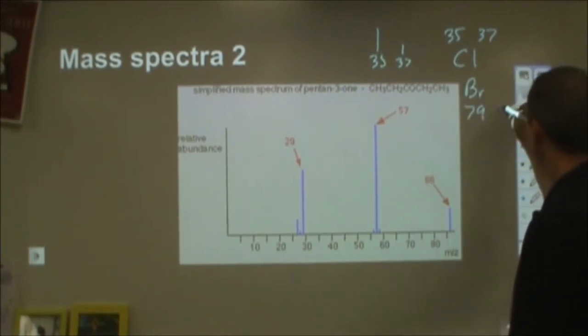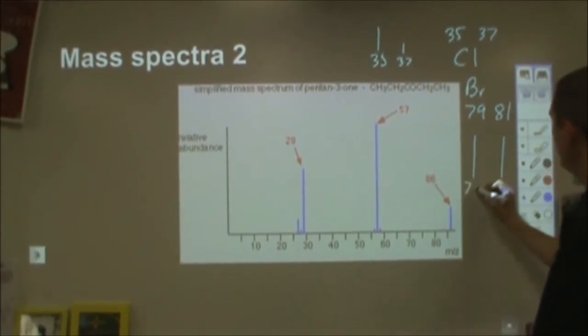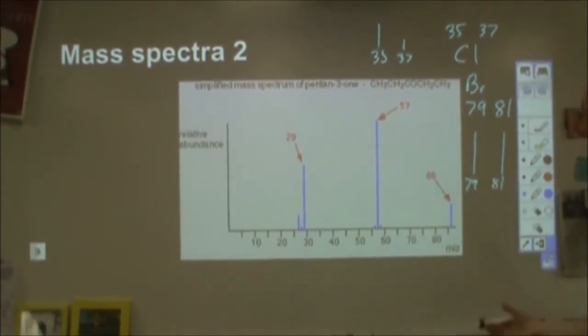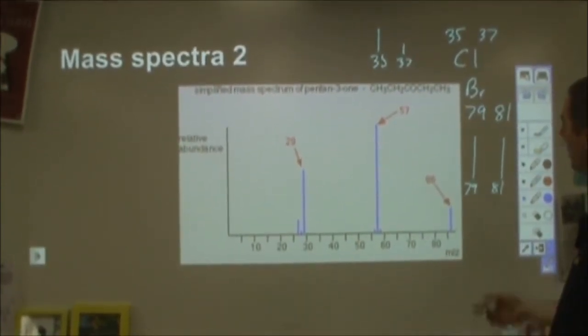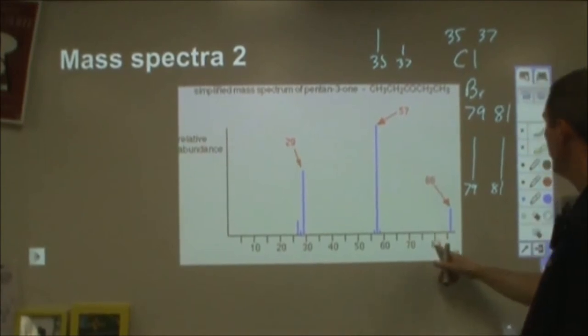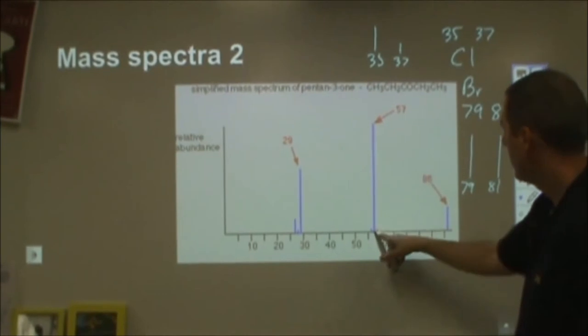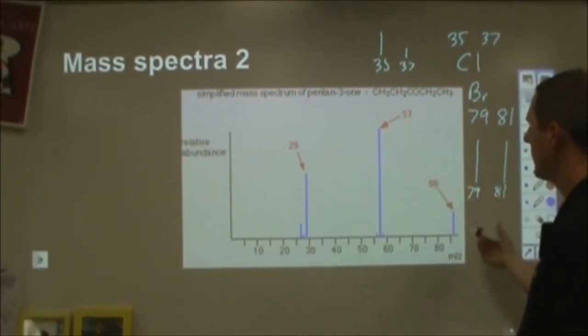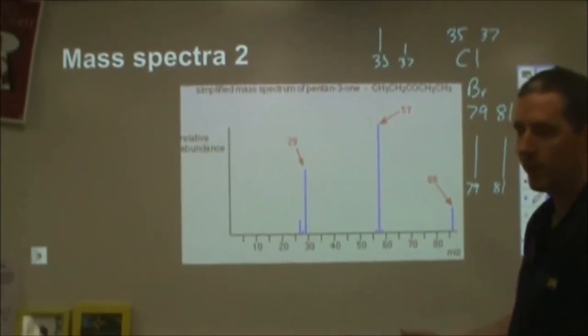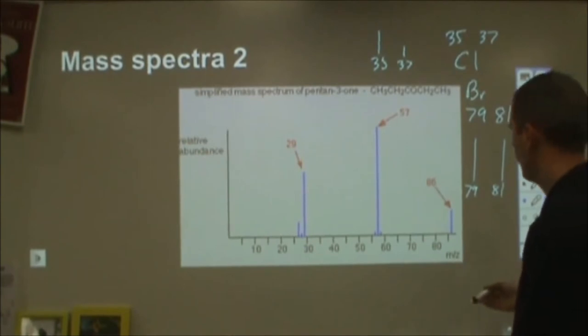So with chlorine, you would expect to see at 35 a peak, and at 37 a peak that's a third as big. For bromine, you have two isotopes, 79 and 81, and they occur about 50-50. The 79 is slightly more common, so you would expect to see those two peaks. So one of the nice things with this is you can quickly rule out whether you have one of those two halogens present in your molecule. Here I have nothing at 79 or 81. I have nothing at 35 and 37. And the peaks that I have that are above those two points don't show me this particular relationship.